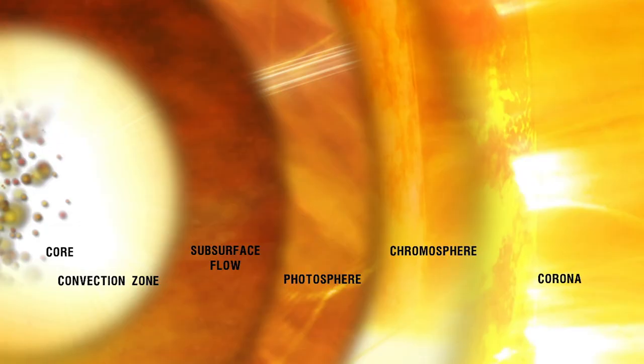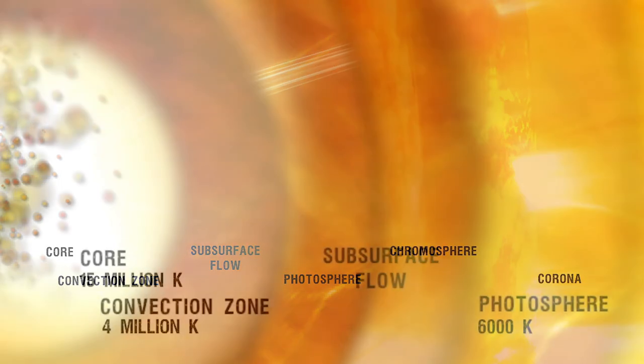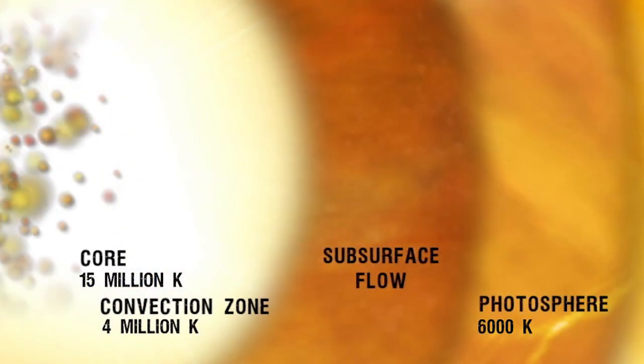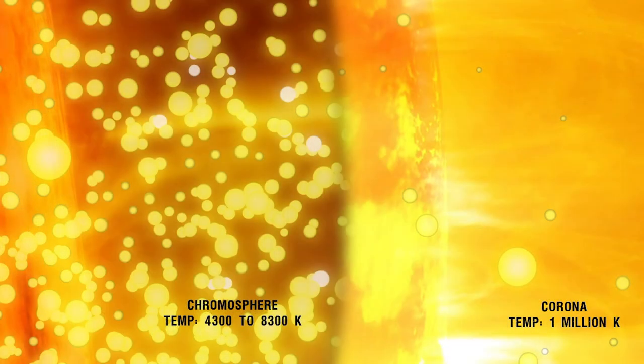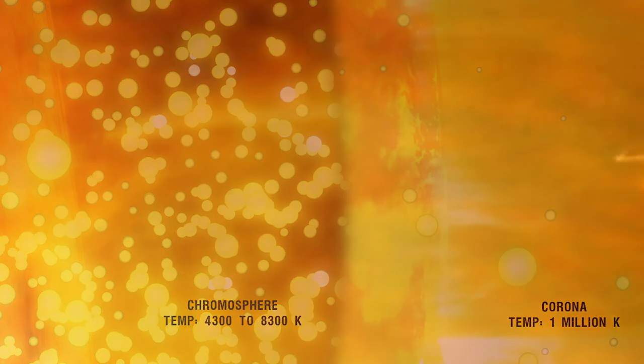The Sun has six regions: The core, the radiative zone and the convective zone, the visible surface called the photosphere, the chromosphere and the outermost region called the corona. At the core, the temperature is about 27 million degrees Fahrenheit, which is enough to continue thermonuclear fusion.